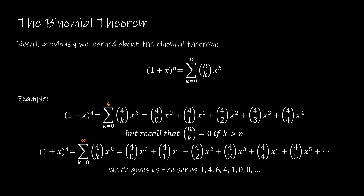Recall that n choose k equals 0 if k is greater than n. That means I can actually write this as an infinite sum, because all of the values beyond k = n are going to be 0. So instead of writing an upper bound of n, we're writing an upper bound of infinity, and that's going to make things much easier for us.